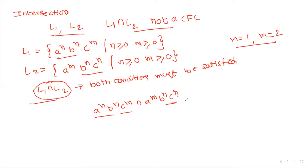Satisfying both conditions at the same time — A's equal to B's and B's equal to C's — is not possible in a context-free grammar. That is the reason the resulting language under intersection is not a context-free language.